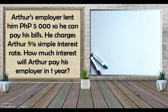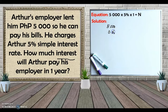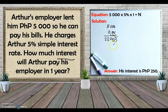Another example: Arthur's employer lent him 5,000 pesos so he can pay his bills. He charges Arthur 5% simple interest rate. How much interest will Arthur pay his employer in one year? To find the interest, we multiply the principal (5,000) times the rate (5%) times the time (1 year). 5,000 times 0.05 equals 250. Counting the decimal places, Arthur's interest in one year is 250 pesos.